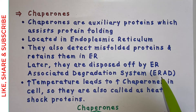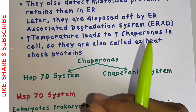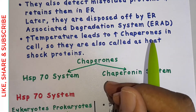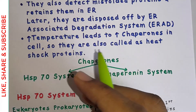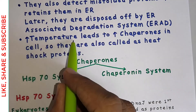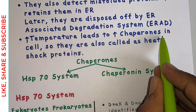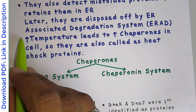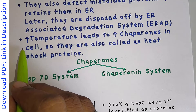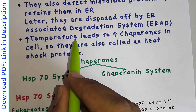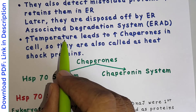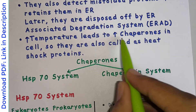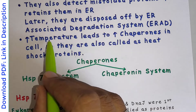The ERAD system will be discussed in a future video. So basically, chaperones have two functions: one is to help in protein folding, and the second is to help in disposing of misfolded proteins. One interesting observation is that whenever a cell experiences increased temperature, it leads to increased chaperones inside the cell. This is a beautifully designed physiological system — increased temperature causes more misfolded proteins, so the cell synthesizes more chaperones to tackle the situation.